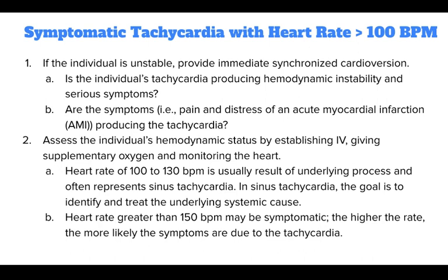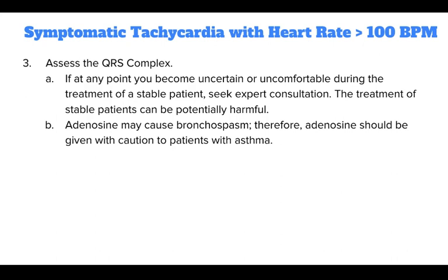Assess the individual's hemodynamic status by establishing IV, giving supplementary oxygen, and monitoring the heart. A heart rate of 100 to 130 BPM is usually a result of an underlying process and often represents sinus tachycardia; the goal is to identify and treat the underlying systemic cause. A heart rate greater than 150 BPM may be symptomatic — the higher the rate, the more likely symptoms are due to tachycardia. You should then assess the QRS complex. If at any point you become uncertain or uncomfortable during treatment of a stable patient, seek expert consultation. Note that adenosine may cause bronchospasm and should be given with caution to patients with asthma.